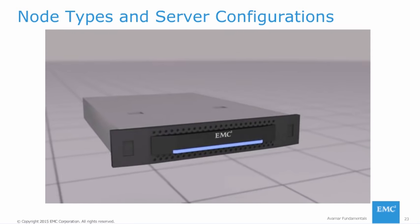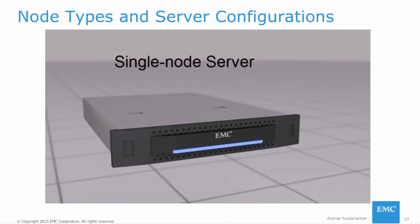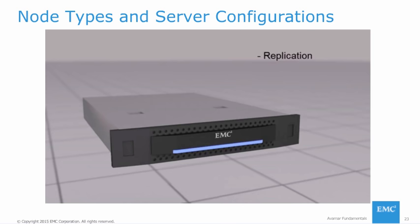At the top of the rack, there are two internal switches that provide communication between all nodes in the Avamar server. Each node is connected to both switches so that a switch failure does not result in a loss of communication. Another type of Avamar server is the single node server, where one node performs the roles of both the utility and storage nodes. Because data is not distributed across multiple nodes, a failure of a single node server will result in unavailability or even loss of data. For this reason, a single node server must have its data replicated to another Avamar server, backup its checkpoint data to an integrated Data Domain, or use RAID-6 protection, as in the Avamar Business Edition single node server.